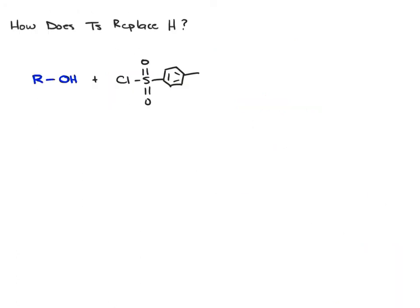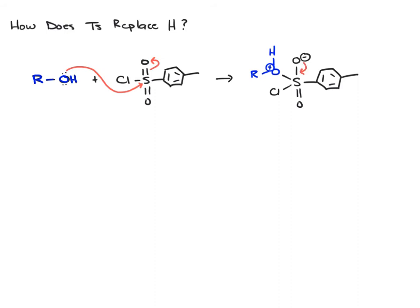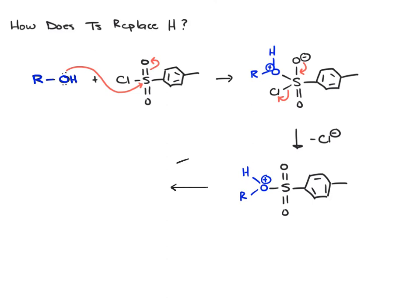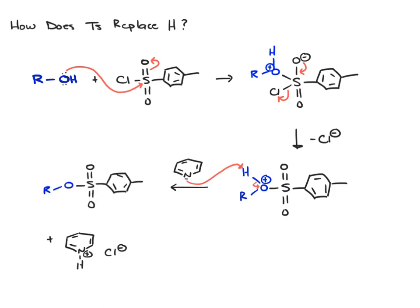You don't have to know this part, but here's how the tosylate replaces the hydrogen. The alcohol reacts with tosyl chloride: the oxygen attacks the sulfur and pushes a lone pair up onto one of the oxygens. That negative charge on the oxygen comes back down to form the S double bond O, and Cl is lost from the sulfur. This gives an intermediate where the oxygen still has its proton — this is where pyridine comes in. Pyridine acts as a base and takes the proton from the oxygen.